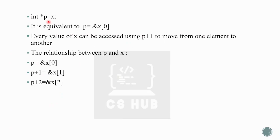Suppose we assign a pointer P: int *p = x. Now p is equal to x, which is equivalent to the address of X[0]. So p holds the address 1000, pointing to the first element. Then p+1 points to the next array element.